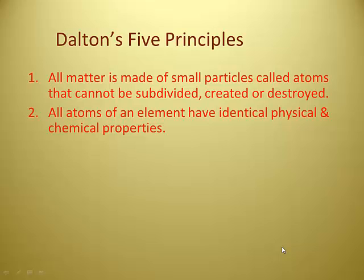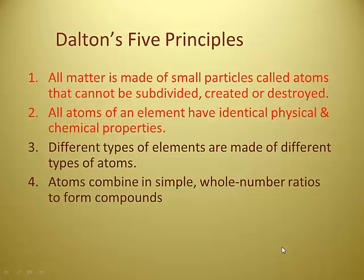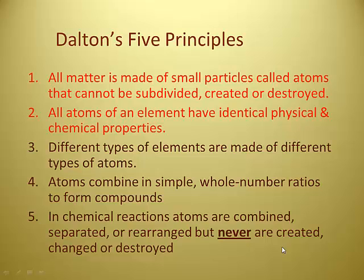Second: all atoms of an element have identical physical and chemical properties — one atom of gold acts like another atom of gold. Third: different types of elements are made of different types of atoms, so a sample of gold is all gold atoms and a sample of silver is all silver atoms. Fourth: atoms combine in simple whole number ratios to form compounds. Fifth: in chemical reactions, atoms are combined, separated, or rearranged, but never created, changed, or destroyed — there's the law of conservation of mass.